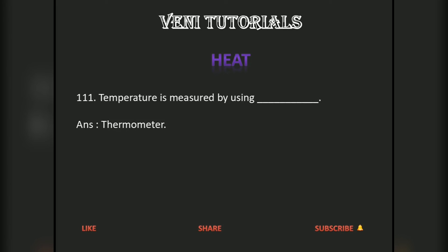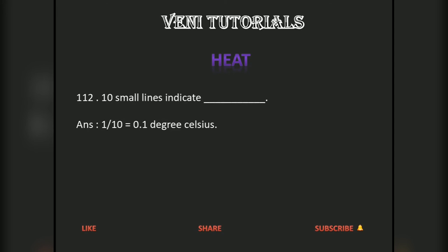Temperature is measured by using a thermometer. On a thermometer scale, 10 small lines indicate 1/10, which equals 0.1 degrees Celsius. 5 small lines indicate 2/10, which equals 0.2 degrees Celsius.